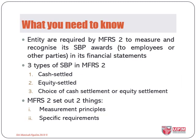To summarise what we need to know about SBP, I put them into three parts. First, the standard requires us to measure and recognise SBP awards in our financial statements. Second, there are three types of SBP transactions: cash settled, equity settled, and others, where we are given a choice to settle in cash or in equity. Finally, under MFRS 2, the standard gives us a guideline on how to measure and recognise SBP and details the requirements for SBP transactions and awards.